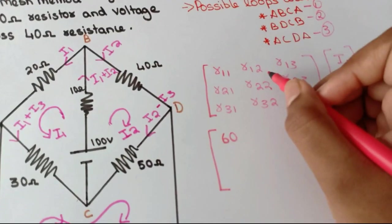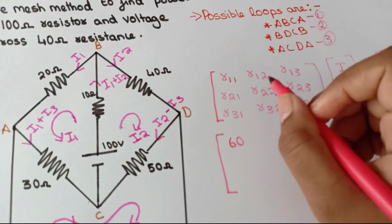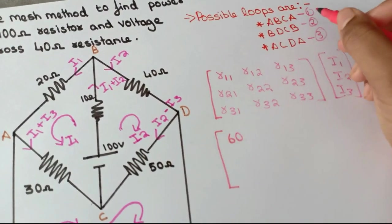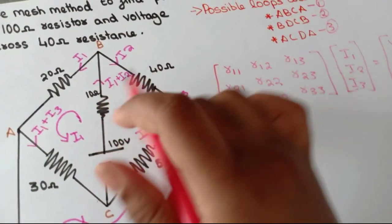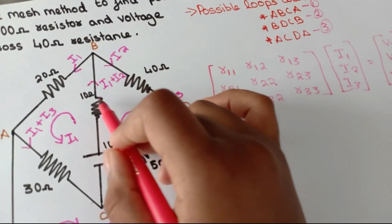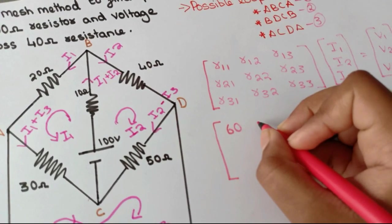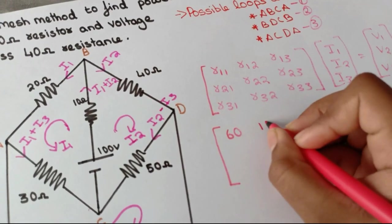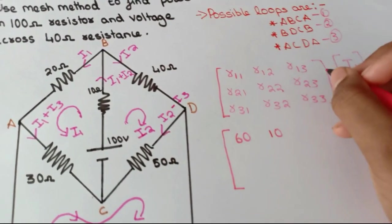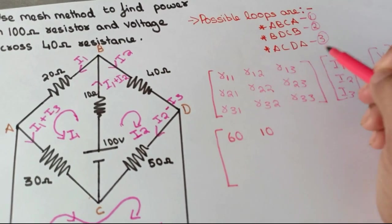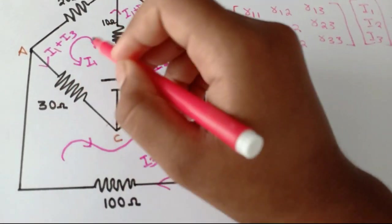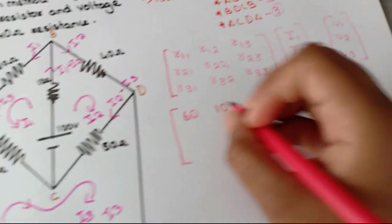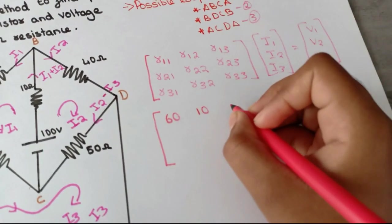R12 is the resistance common to loops one and two. The resistance common to loops one and two is 10 ohms, and the current flowing there is I1 plus I2, so it's positive 10. R13 is the resistance common to loops one and three — there's a 30 ohm resistance common to those two loops, and the current is also positive, so R13 is 30.